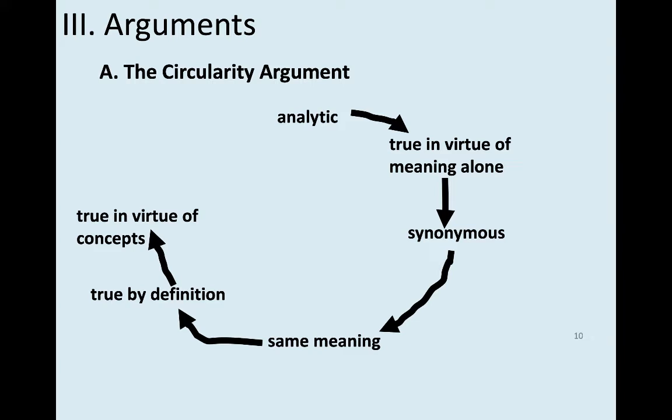Kant used this language to explain a priori analyticity. He talked about containment — one word containing another, or one concept containing another. And then someone might say, what is it for one concept to contain another, or for a proposition to be true in virtue of the concepts involved?